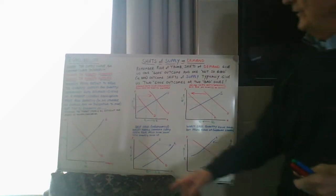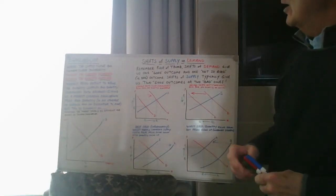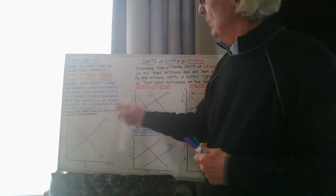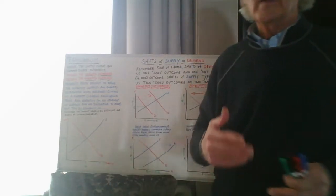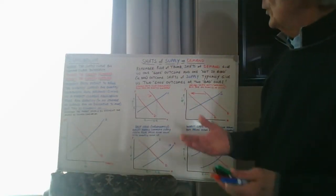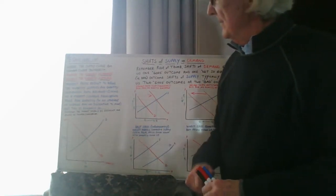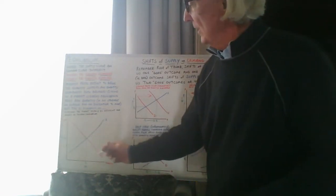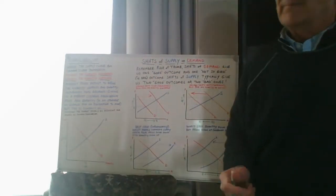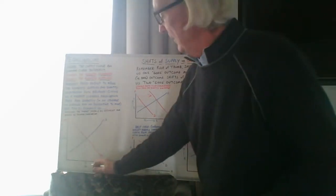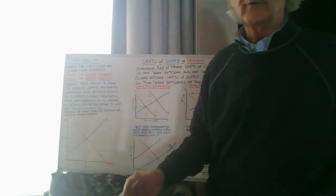At the point where supply and demand intersect — equilibrium — we call it a market clearing equilibrium price and a market clearing equilibrium quantity. In other words, we are in balance and there are no shortages or surpluses. For instance, if the equilibrium price for tires was $80, that gives us a market clearing equilibrium quantity of 4 million tires.